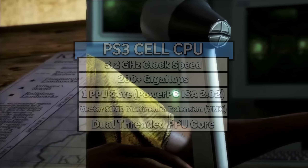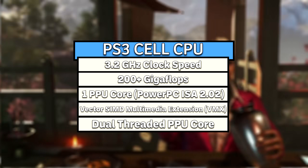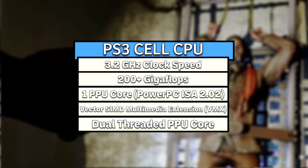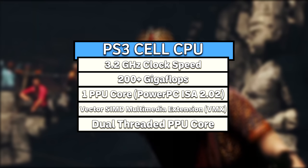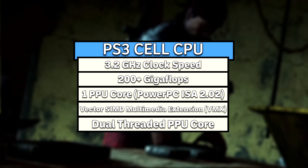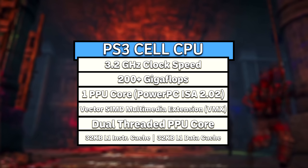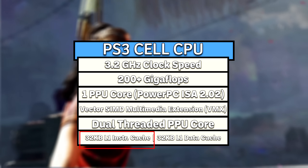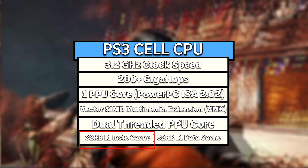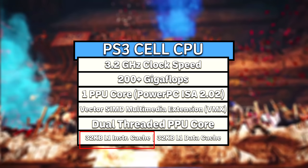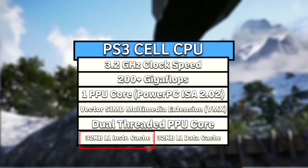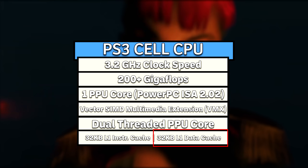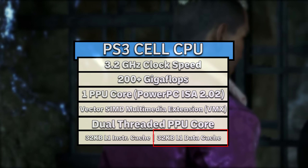Diving deeper into the PPU, it's a dual-threaded processor, which means it can juggle two threads simultaneously — almost as if there were two physical cores, even though there's only one. And in prime conditions, it can even dish out up to four instructions per cycle, thanks to dual issuing. It's equipped with a 32-kilobyte L1 instruction cache and a matching 32-kilobyte L1 data cache to minimize delays. The instruction cache stores recently used program instructions, like code snippets from games or even the operating system, and prevents the CPU from constantly fetching them from slower main memory. The data cache does the same, but just for data values that the instructions operate on, like numbers, variables, or game states.